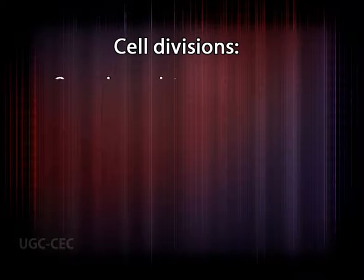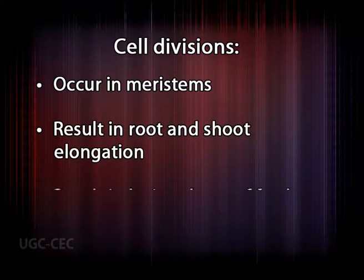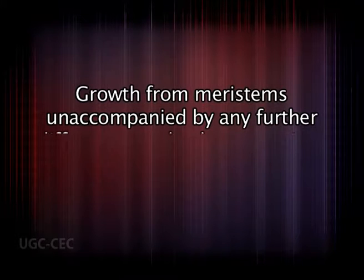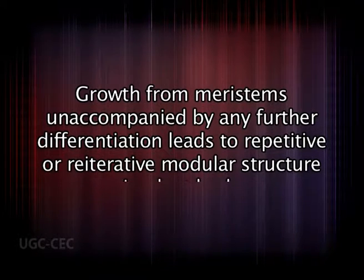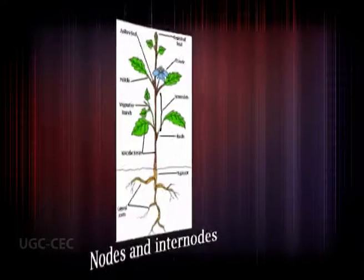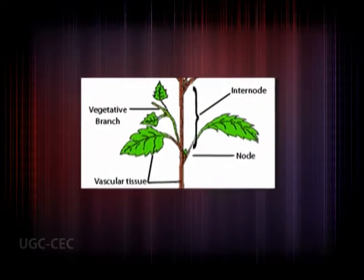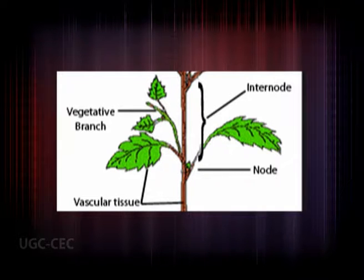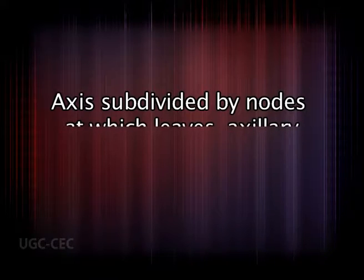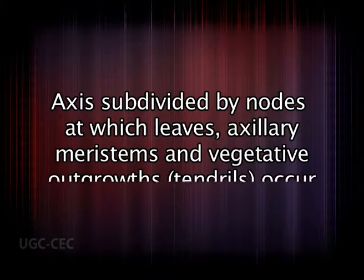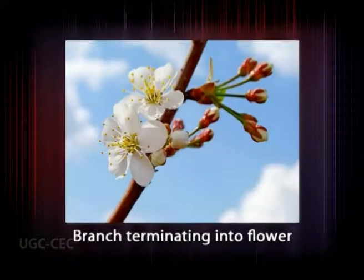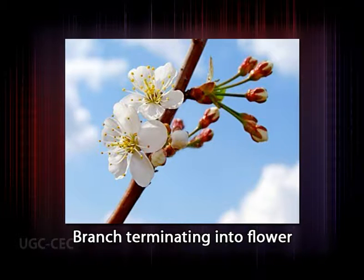Conversely, most plants are modular. Growth and differentiation are normally initiated in meristems at the apices of shoots and roots. Cell divisions occur in these meristems, resulting in root and shoot elongation and the laying down of further meristems. Growth from meristems, unaccompanied by any further differentiation, leads to a repetitive or reiterative modular structure in the plant body. Botanically, a module is an axis — essentially a length of tissue with an apical meristem at its distal end — subdivided by nodes at which leaves, axillary meristems, and vegetative outgrowths may occur.